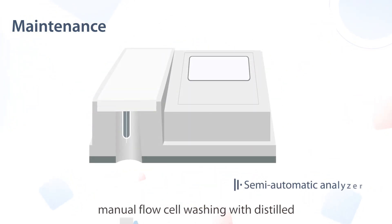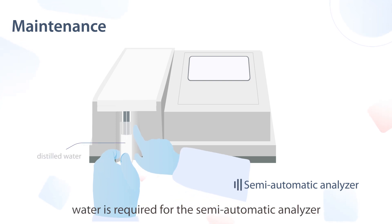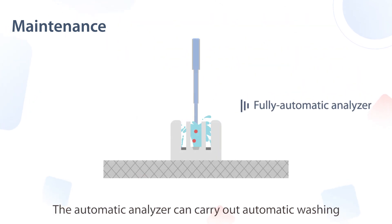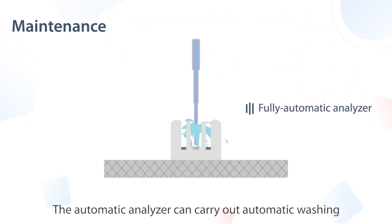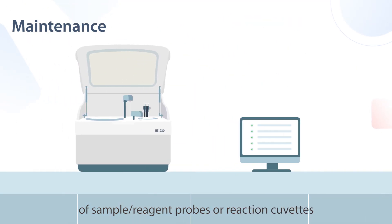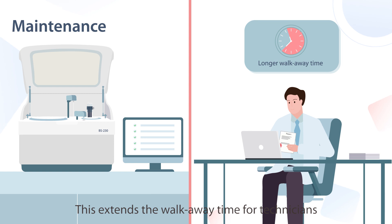When switching from one test to another, manual flow cell washing with distilled water is required for the semi-automatic analyzer. The automatic analyzer can carry out automatic washing of sample reagent probes or reaction cuvettes, which extends the walk-away time for technicians.